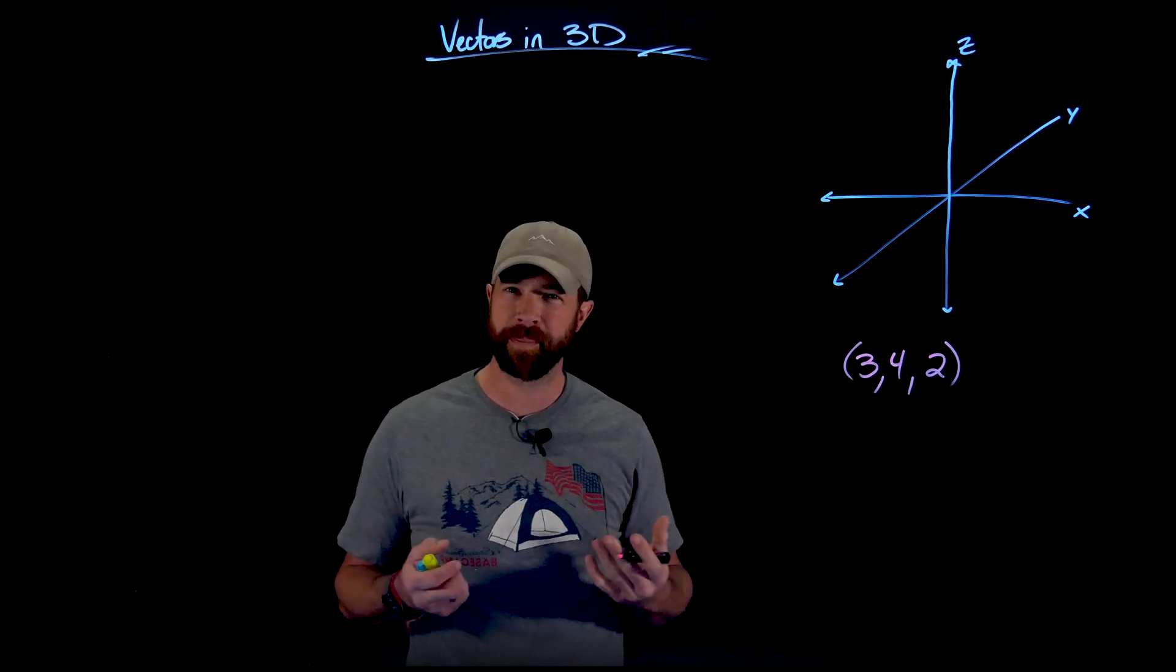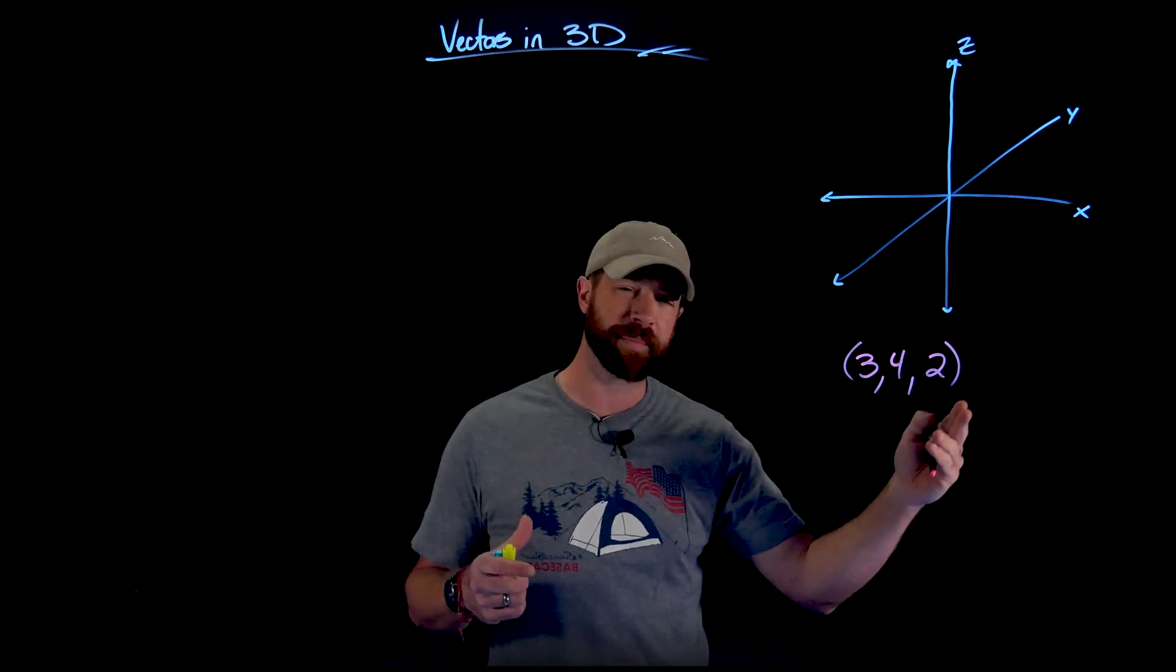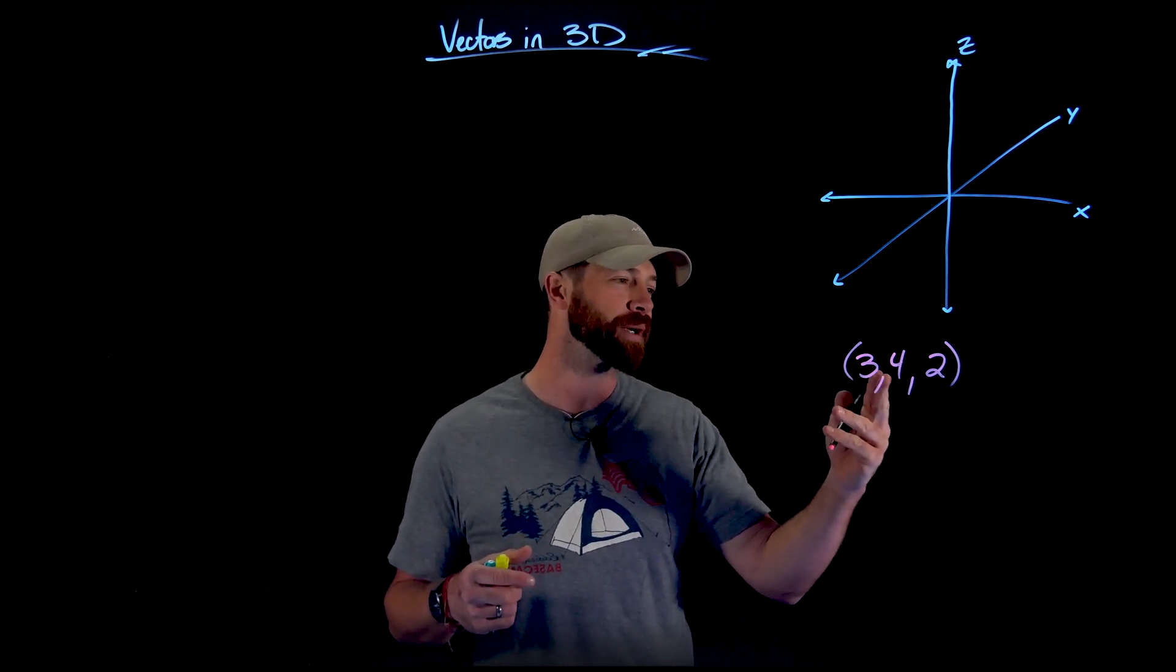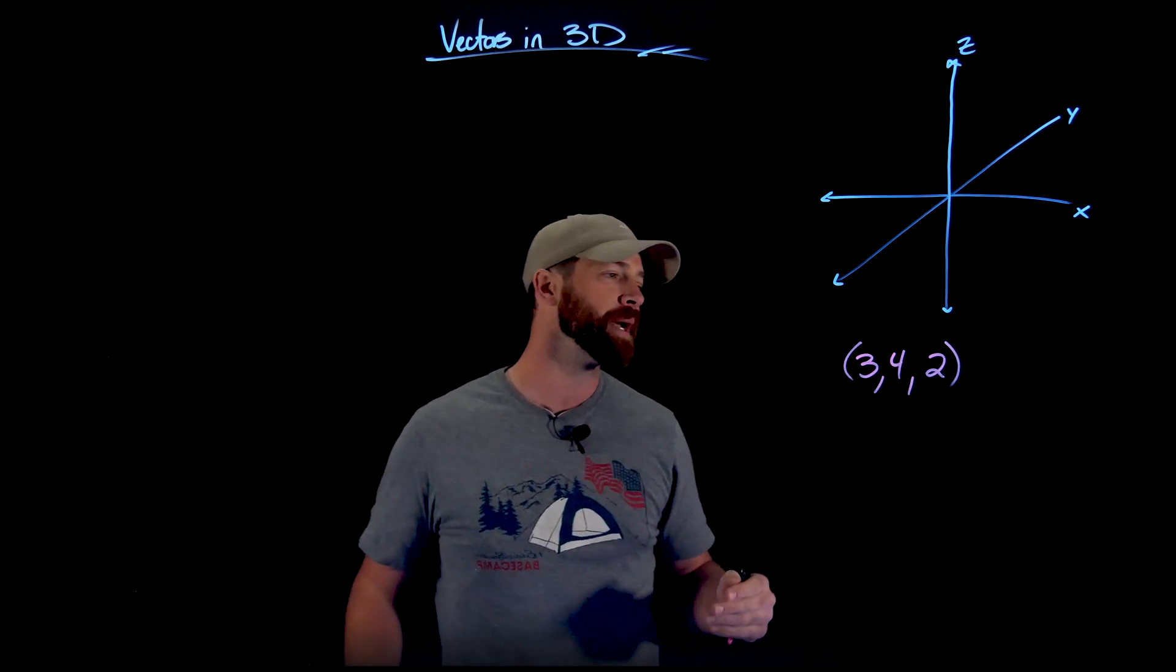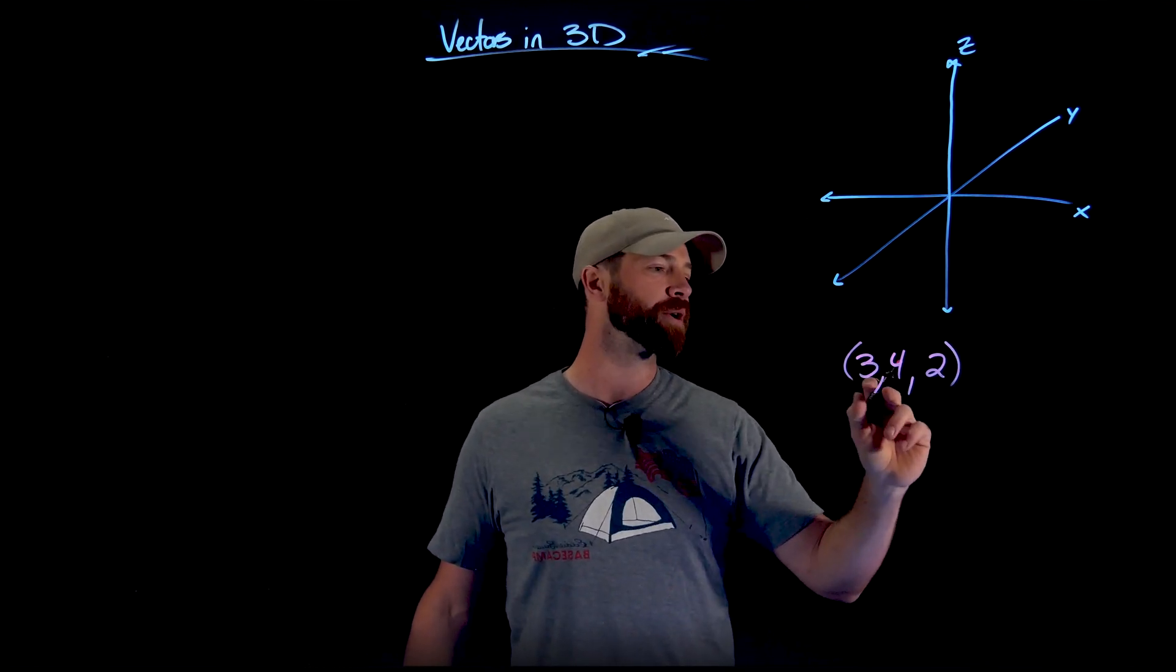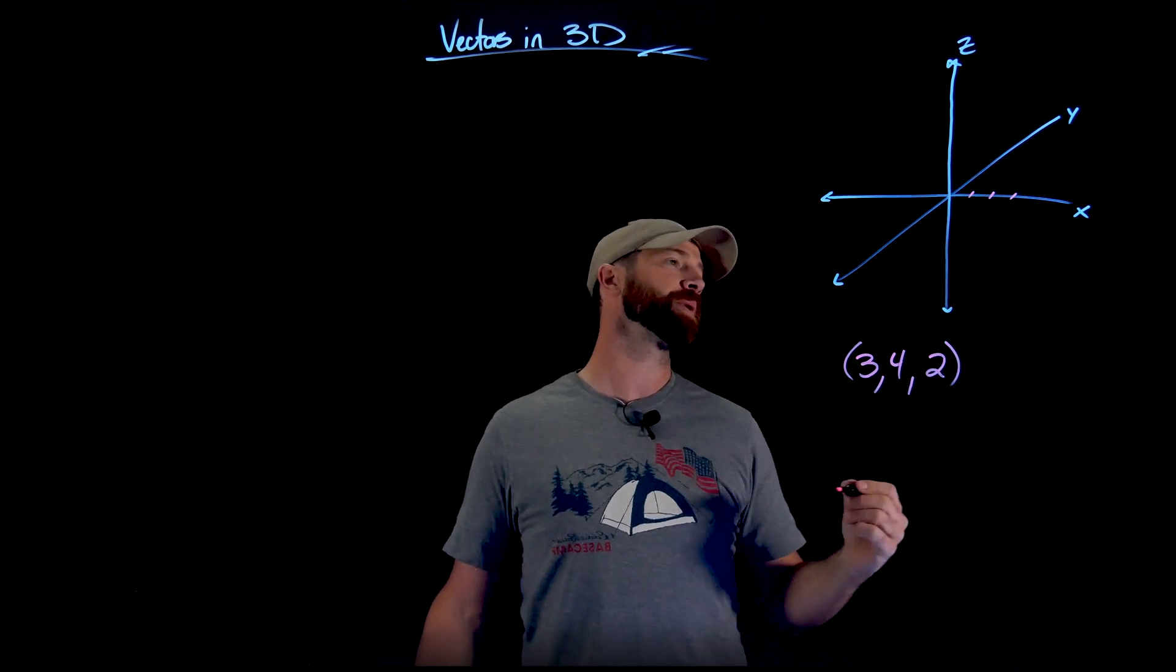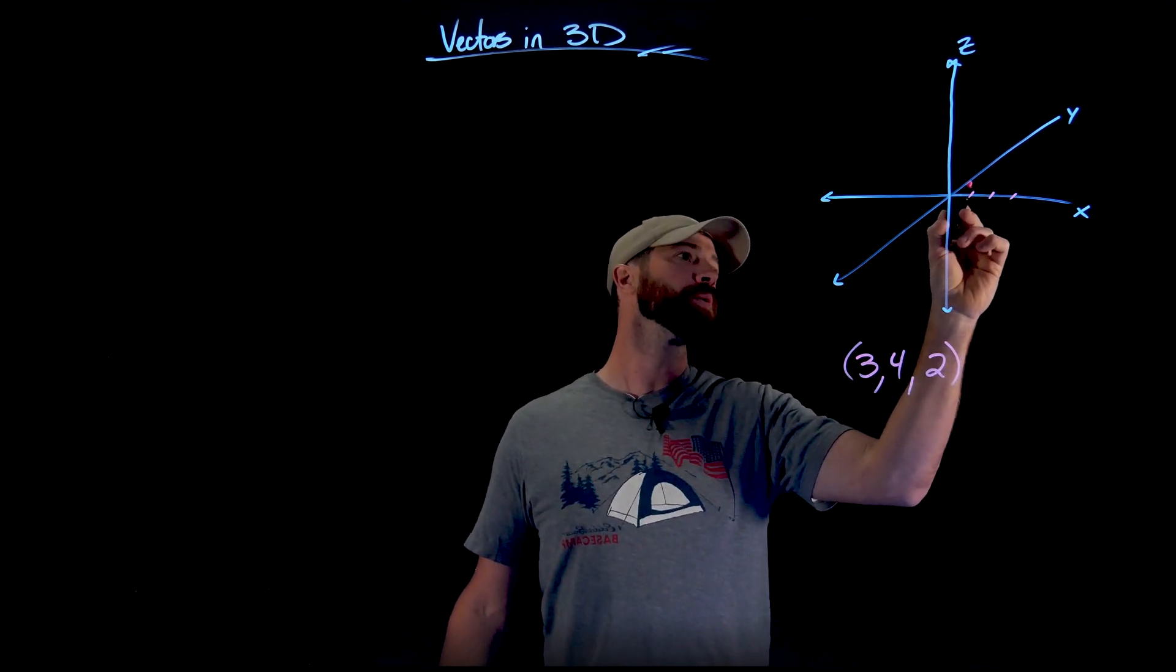By the way, we call two-dimensional points ordered pairs. The ordered part means that we go in alphabetical order. So this is an X coordinate, Y coordinate, and Z coordinate that give us a space. And when you're drawing this, this is how I would do it. So I'm going to go three on the X axis here. So I'm just kind of making my units right here. Four on the Y axis - one, two, three, four.